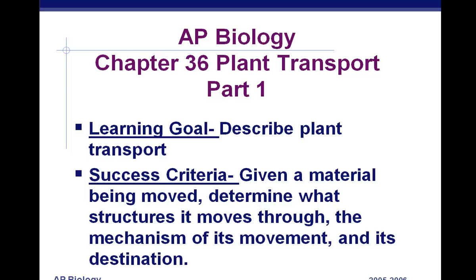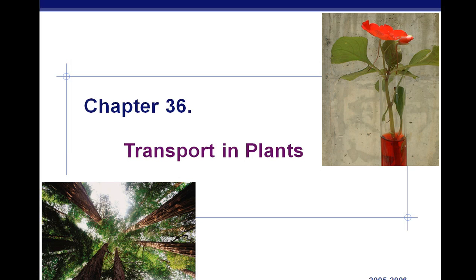AP Biology, Chapter 36, Plant Transport, Part 1. Today we're going to learn about how things are moved around in plants. Consider that plants have to move water from the ground up hundreds of feet in some cases to where the leaves are to do photosynthesis. We also have to move things like sugars from the leaves back down to the roots, and exchange gases in the leaves.